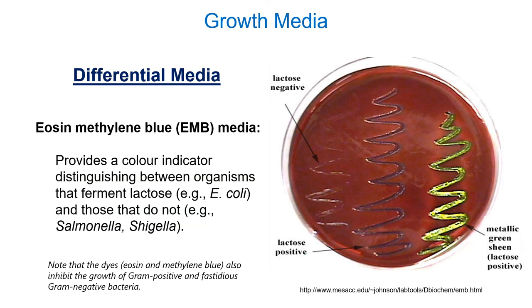Eosin methylene blue (EMB) media provides another way to test whether a bacterium can metabolize lactose. This media contains lactose as a food source along with two dyes — eosin and methylene blue. Bacteria capable of metabolizing lactose break it down and generate acidic waste products. The acidity allows these dyes to be taken up and bind to those bacteria, changing colony color — lactose-metabolizing bacteria turn purple or even metallic green, while those that can't remain colorless. Note the dyes also inhibit gram-positive and fastidious gram-negative bacteria, making this also a selective media.